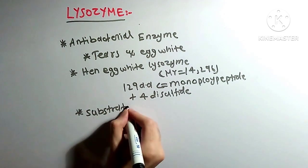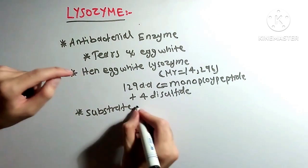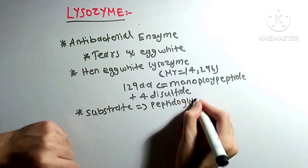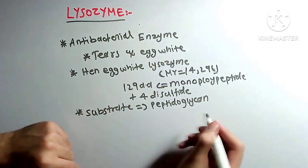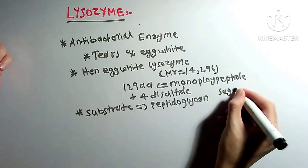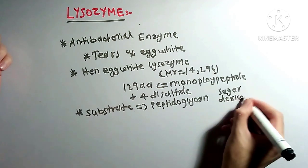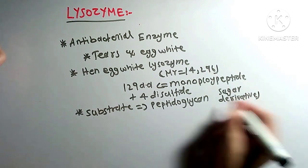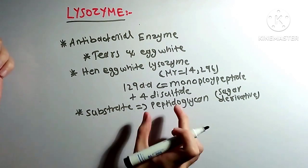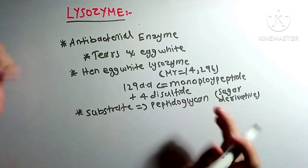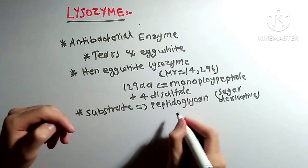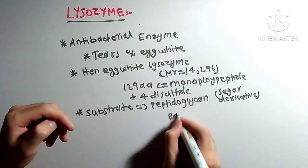If we talk about this enzyme's substrate — since it is an antibacterial enzyme, its substrate is exactly peptidoglycan. Peptidoglycan is a sugar derivative. As you can see, peptidoglycan consists of a portion which includes protein and glycan, meaning a polymer of sugar. This molecule is found in the bacterial cell.